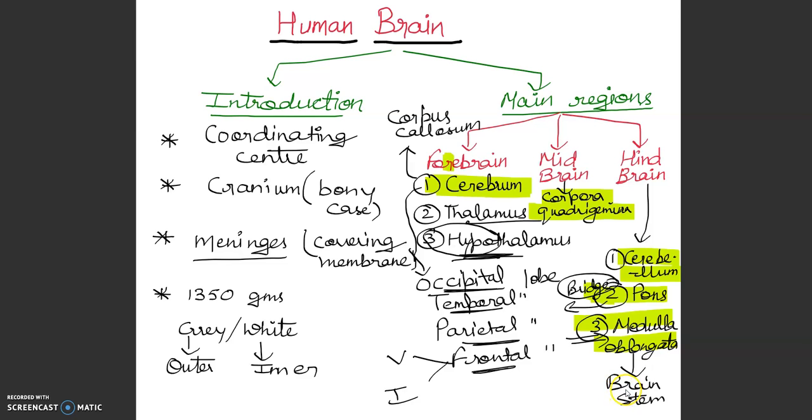We have some activities like swallowing, coughing, sneezing, vomiting, heartbeat. Involuntary activities are all medulla oblongata.